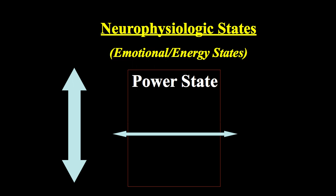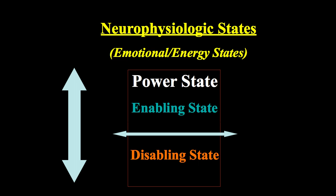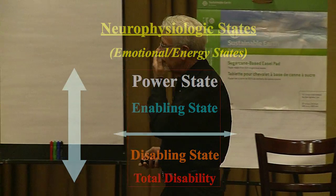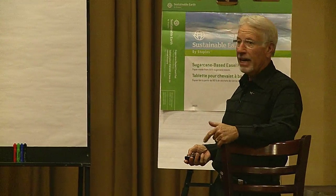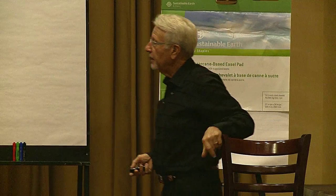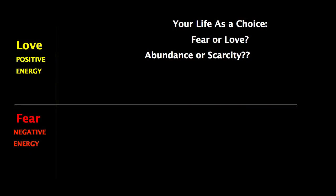This is based on emotional states. Total disability is a feeling state — people really don't accomplish very much when they're emotionally disabled; they make very bad decisions. Then there's the enabling state, and then the frank power state. Number one in the downward spiral: we evaluate or judge people, which puts us at an energy level of 175 — and nothing happens but bad stuff when energy is below 200.